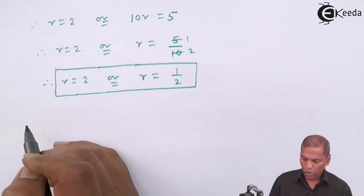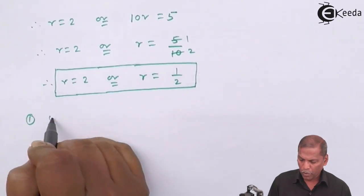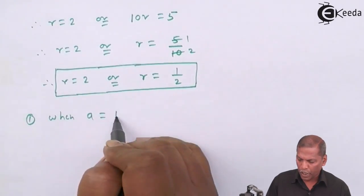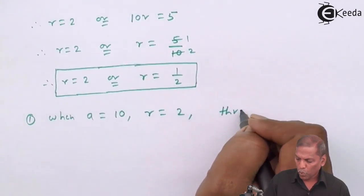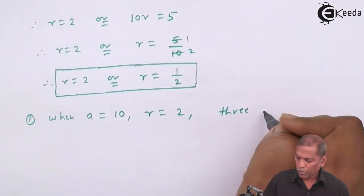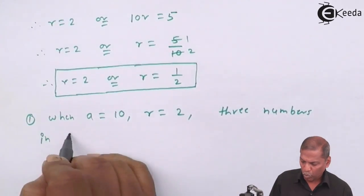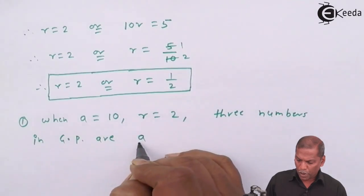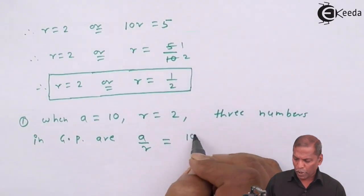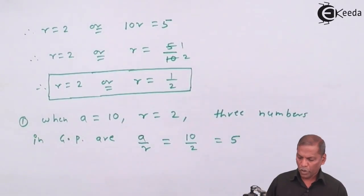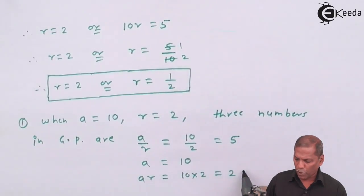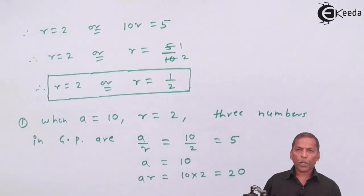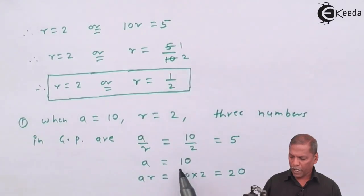Now we apply two cases. Case 1: when A = 10 and R = 2. The three numbers in GP are: first number A/R = 10/2 = 5, second number A = 10, and third number AR = 10 × 2 = 20. So the three numbers are respectively 5, 10, and 20.